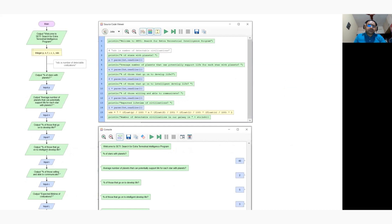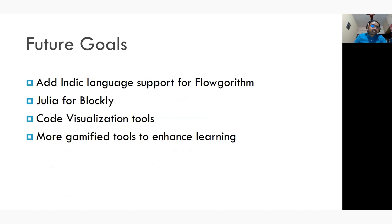Future goals include adding Indic language support for FlowRhythm, which would enable more students to learn computing and programming at an early age. There is also Google's Blockly tool, which can generate source code from blocks in languages such as Python. We can also develop a Code Visualization Tool that takes source code and produces a graphical visualization — the opposite of the flowchart tool. Additionally, we can develop more gamified tools to enhance the creativity and learning of Generation Z students.